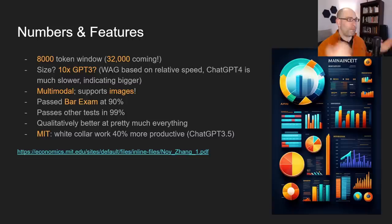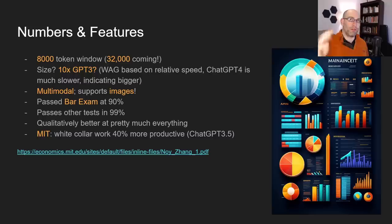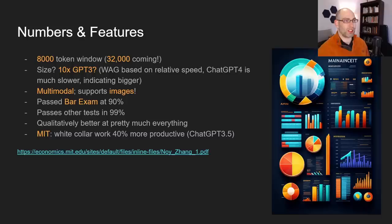In terms of parameter count, we don't really know. But looking at the scale of speed — comparing Curie versus DaVinci, which are GPT-3 models, the difference was about 10x — and then looking at the relative speed of GPT-4 versus GPT-3, maybe it's about 10 times again. So if I had to guess, maybe GPT-4 is in the 1 trillion parameter range. It is definitely slower, and the fact that it's slower indicates more processing — more parameters, a deeper, larger model.